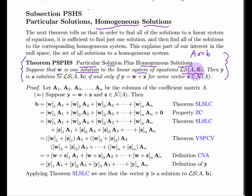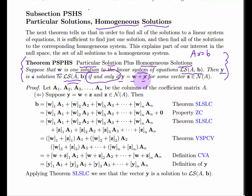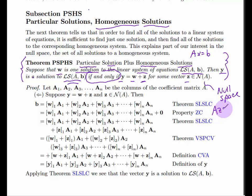We're taking one particular solution, one particular W that satisfies this equation — that is, A times W equals B. Then Y is a solution to the same system if and only if Y can be written as W plus Z, where Z is some vector in the null space of A. Remember, Z being in the null space of A means that A times Z equals zero.